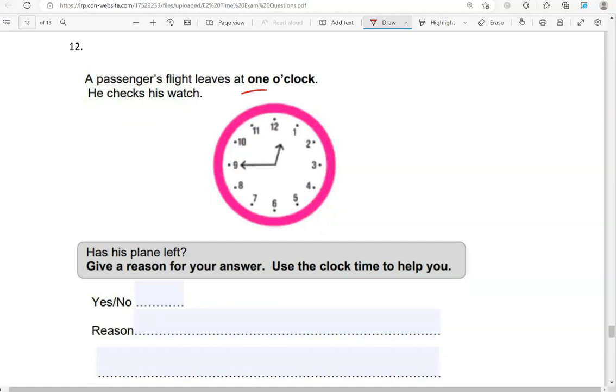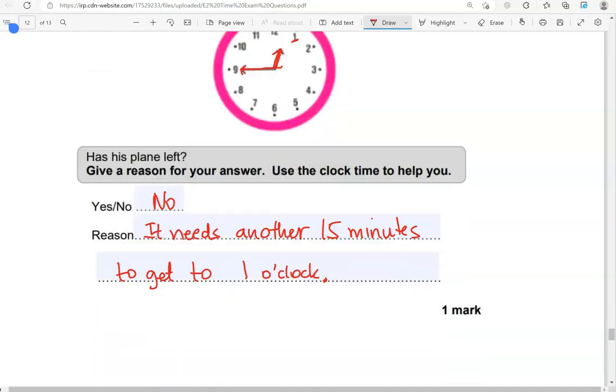A passenger's flight leaves at one o'clock. He checks his watch. Has his plane left? Give a reason for your answer. Use the clock time to help you. So, if we look at the clock, it isn't one yet. So, it needs another 15 minutes to get to one o'clock. So, we're going to say no. Reason is it needs another 15 minutes to get to one o'clock. Or quarter of an hour it needs to get to one o'clock.